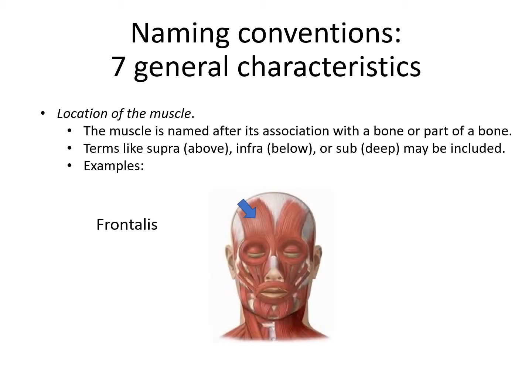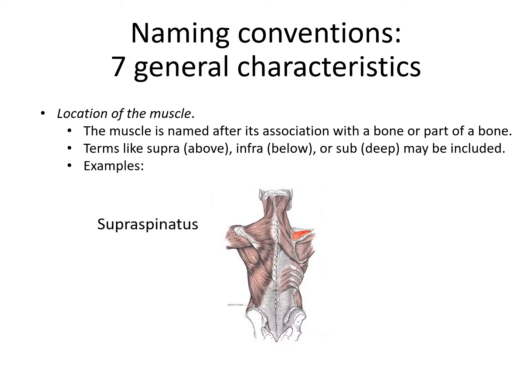Some examples: the frontalis is named after its association with the frontal bone. The supraspinatus is named because it is superior to the spine of the scapula, therefore supraspinatus. Likewise, the infraspinatus is named after its position relative to the spine of the scapula — but in this case, because it's below it, it's called the infraspinatus. So this is the location of the muscle.